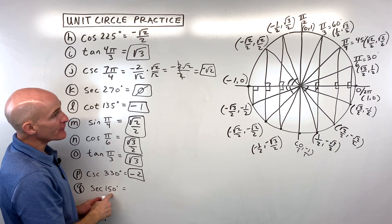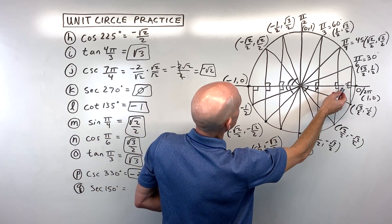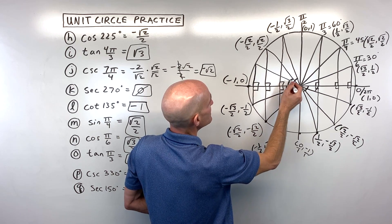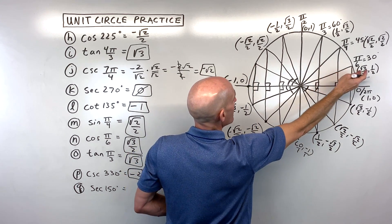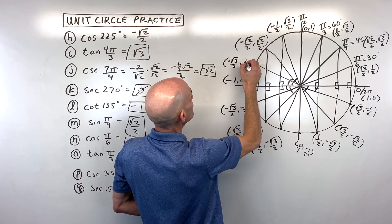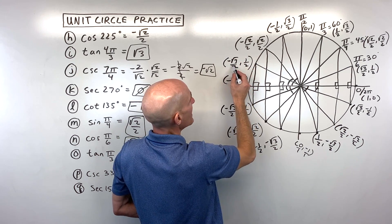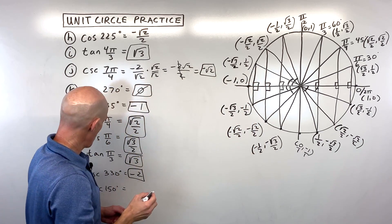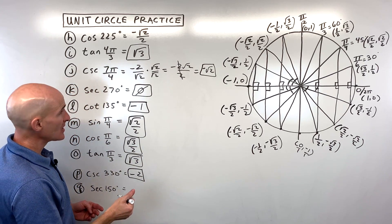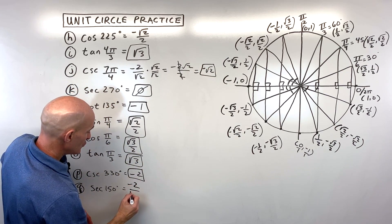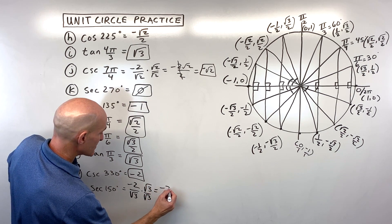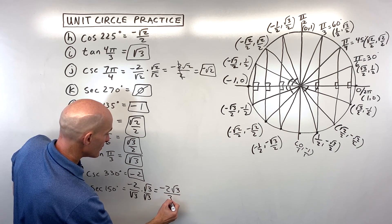Letter Q: secant of 150 degrees. 150 is 90 plus 60 more, landing in the second quadrant with a 30-degree reference angle. Coordinates are negative √3/2, positive 1/2. Secant is the reciprocal of cosine (the x-coordinate): flip negative √3/2 to get negative 2/√3. Rationalize by multiplying by √3/√3: the answer is negative 2√3/3.